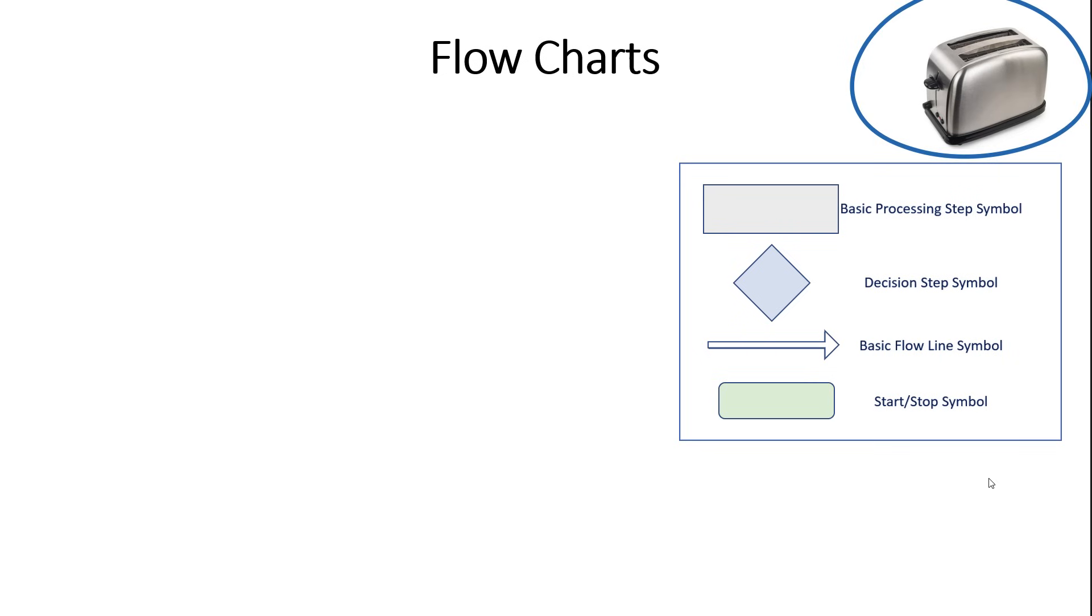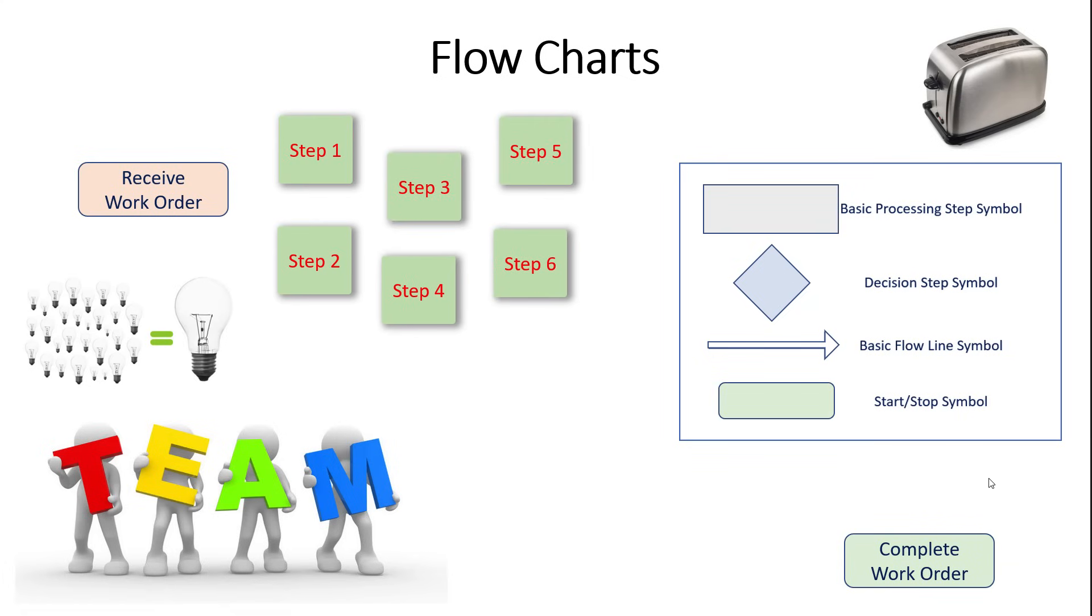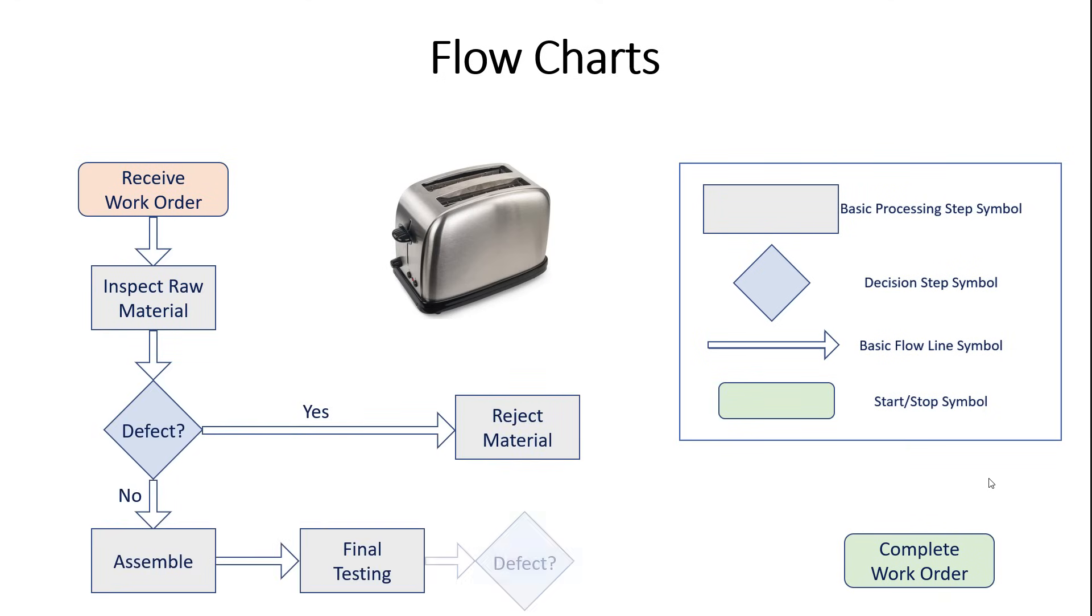Let's say we're talking about our toaster and we want to make an improvement. The first thing we're going to do is start with the boundaries. We want to go from receiving a work order to completing a work order. Now I've got the team here because all of these tools are team-based. Brainstorm all of the steps in the process. Use post-it notes, write down all the activities, and then organize those thoughts into that logical flow or sequence of activities for your process.